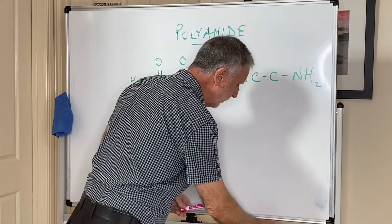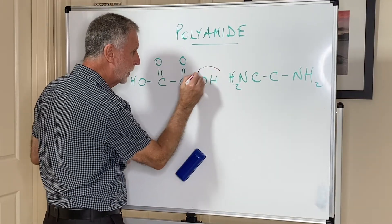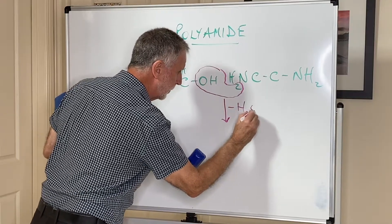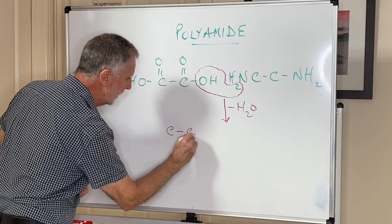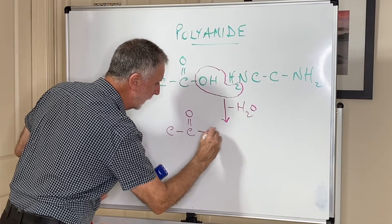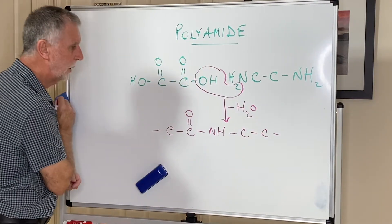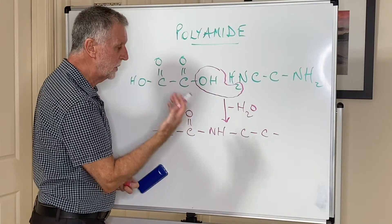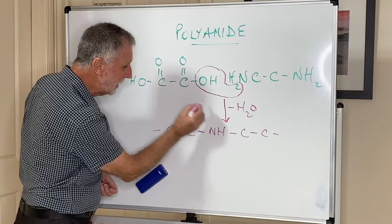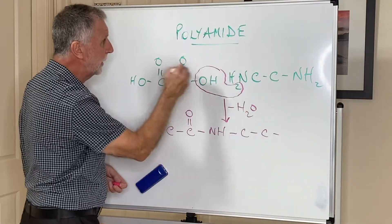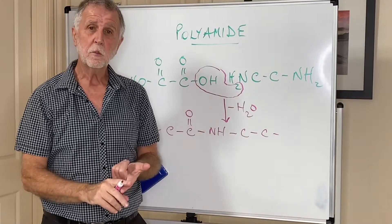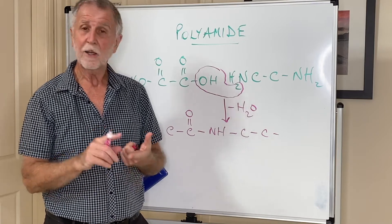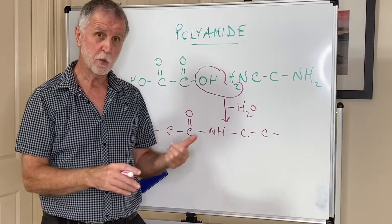Just like in the polyester, the carboxylic acid again loses the OH, and the amine loses one of its hydrogens. So again, another condensation reaction where we lose water. This now becomes C-O-N-H-C-C and so on. The same would happen on each end — water is eliminated and a condensation reaction takes place. This is an amide linkage, and when you repeat that over and over again, you make a polyamide. A classic example would be nylon, which is used in clothing and electrical fittings. Another would be Kevlar, which is used in bulletproof vests — showing just how strong these bonds are.